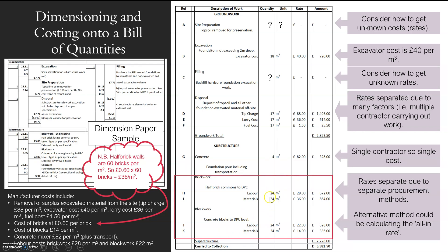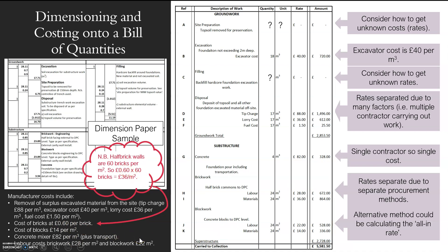I put the numbers in the quantity column and my unit rates. I've put labor and materials separately because I could have a different labor person — say my materials are from one manufacturer and my labor is a contractor. Or again, you could do an all-in rate. Now my cost of bricks is per brick, but I need it to be per meter squared because I've measured brickwork in 24 meters squared. So I need to convert 60p per brick into a cost per meter squared — and that's how you do it.